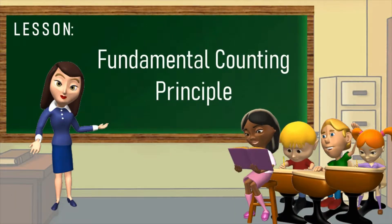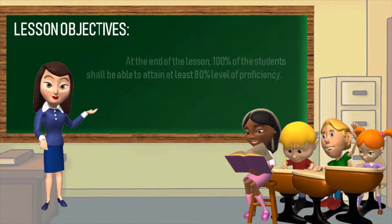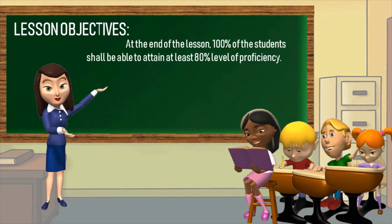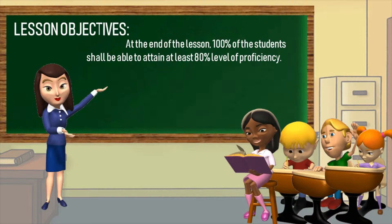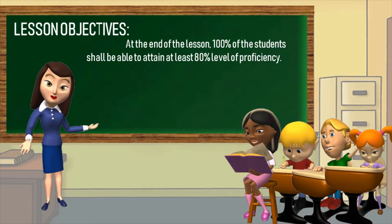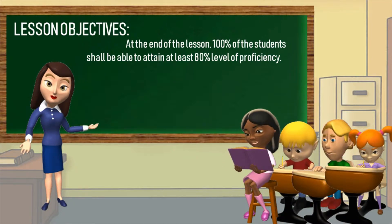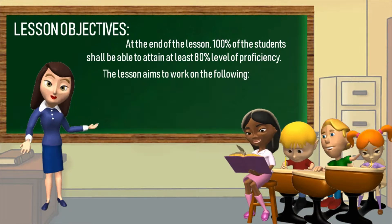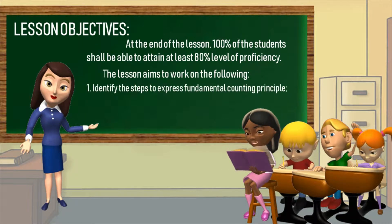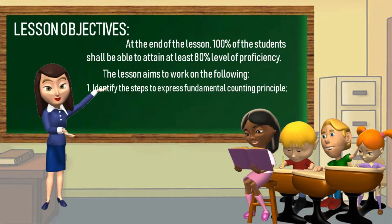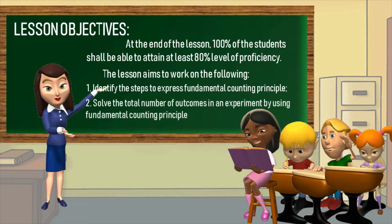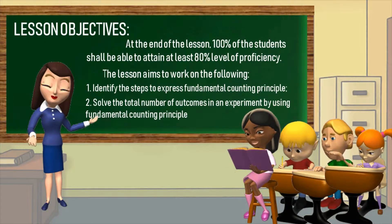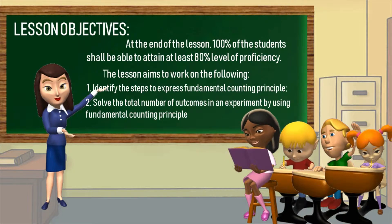Fundamental Counting Principle. Lesson objectives: At the end of the lesson, 100% of the students shall be able to attain at least 80% level of proficiency. The lesson aims to identify the steps to express Fundamental Counting Principle, and solve the total number of outcomes in an experiment by using Fundamental Counting Principle.